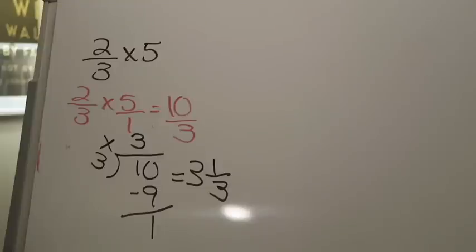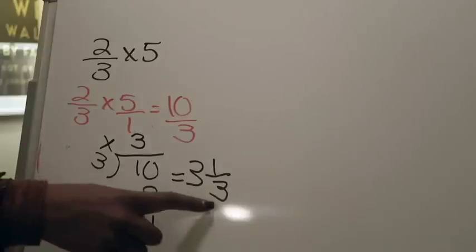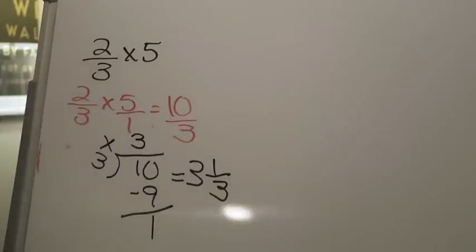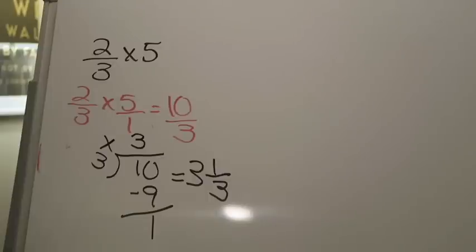If you want to check your work, you can multiply three times three, which is nine, plus one equals ten — and you'd get back to 10/3, confirming the answer is correct. Those are the examples from both lesson 7.2 and 7.3. Once you understand how to read the problem and what each part is telling you to do, the hardest part is done. I'll flip my camera around and give you some closing thoughts.